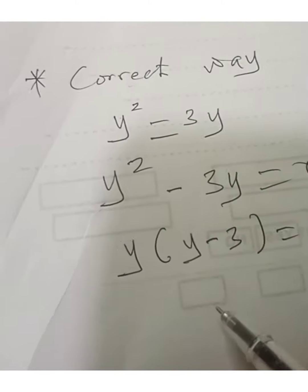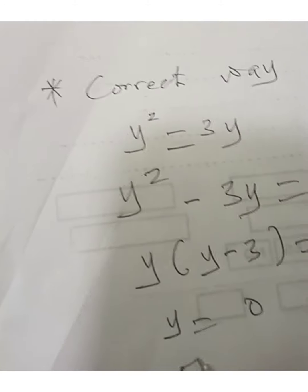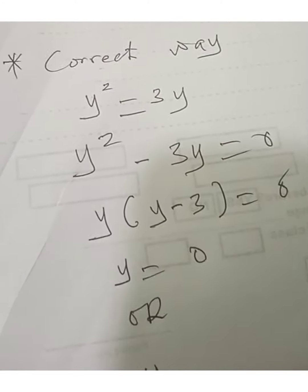So from this form of the equation, either y equals 0 or y minus 3 equals 0. Hence y equals 0 or y equals 3.